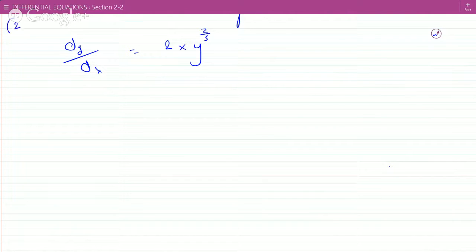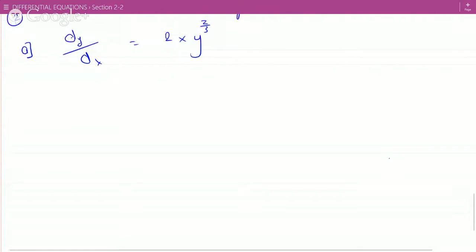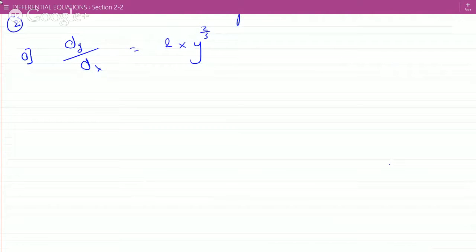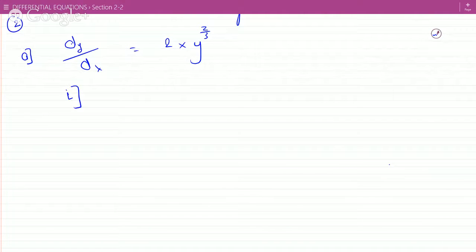So this is dy over dx equals 2xy to the two-thirds. So for this it says, let's answer the first part first. Determine in the xy plane where the solutions exist.